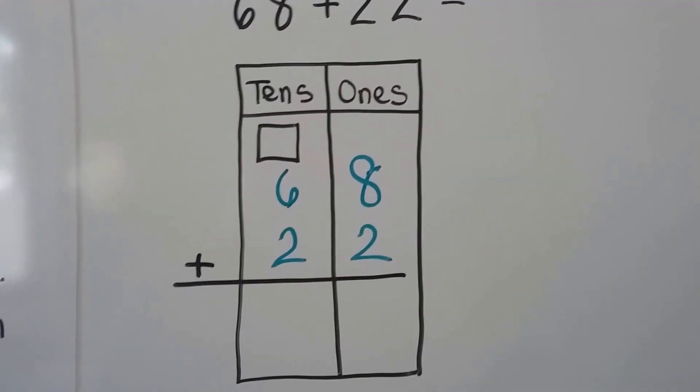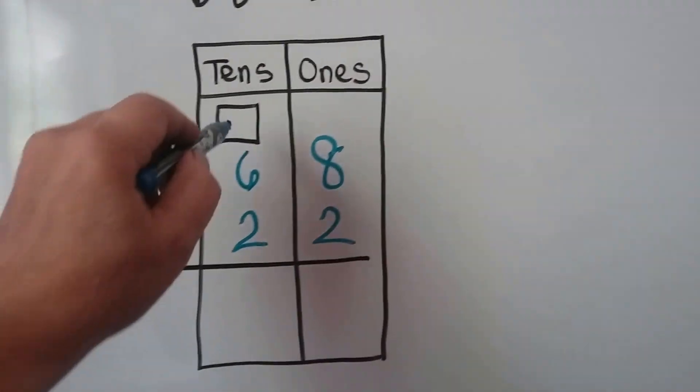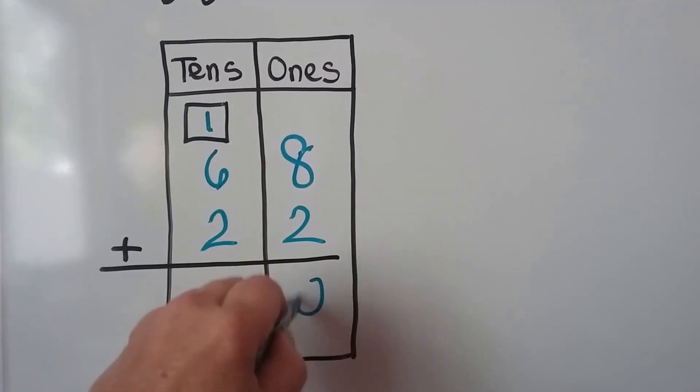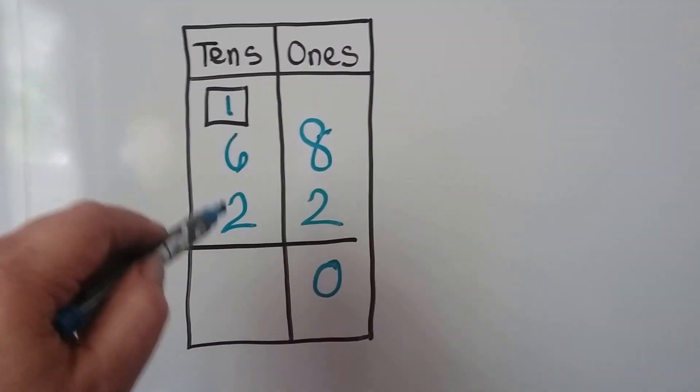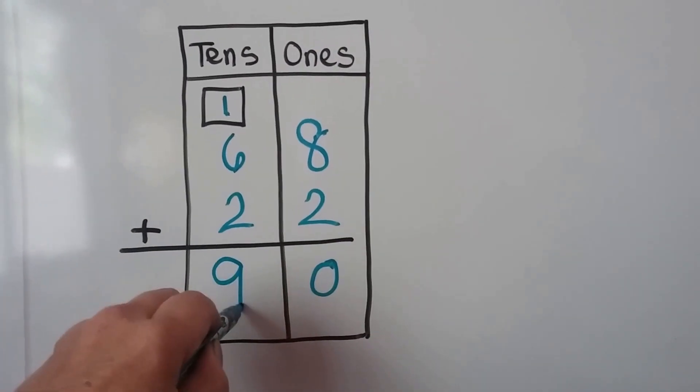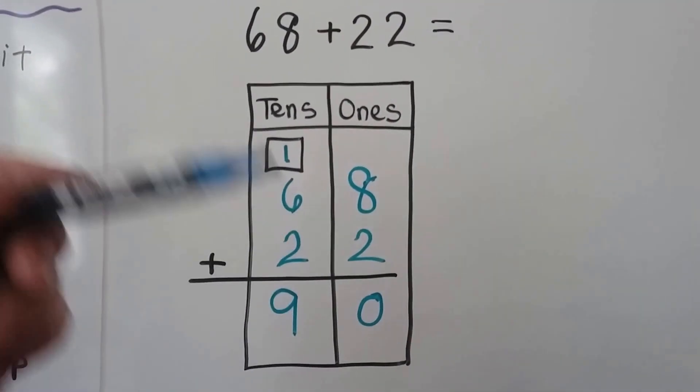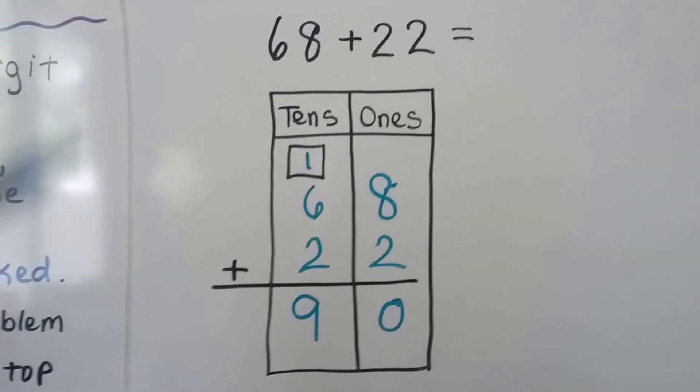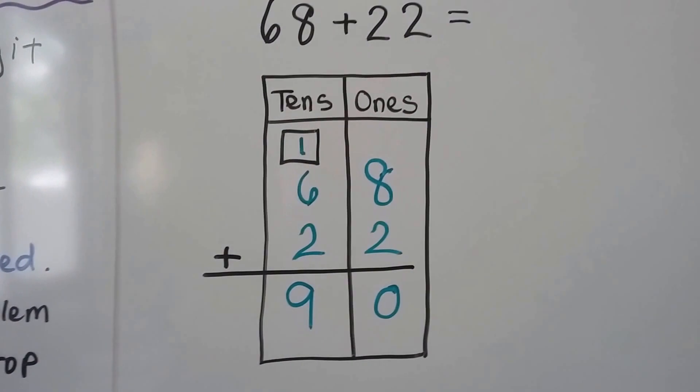We start counting with the eight and count on eight, nine, ten. We get one ten and zero ones. We add the tens place six, seven, eight, nine and we get 90. And sometimes it's just easier to add it when it's stacked compared to when it's written like an addition sentence. Because then we can just go straight down the ones and straight down the tens.